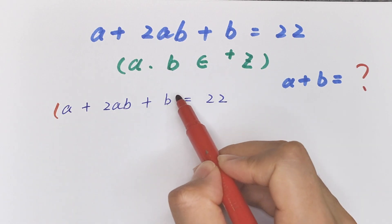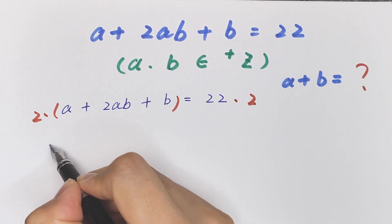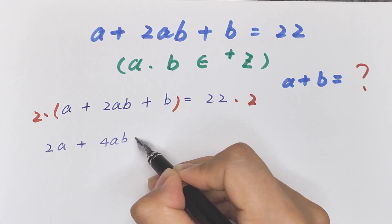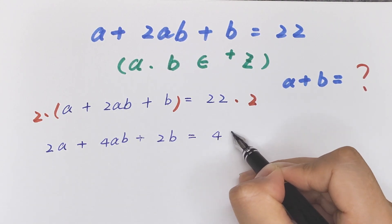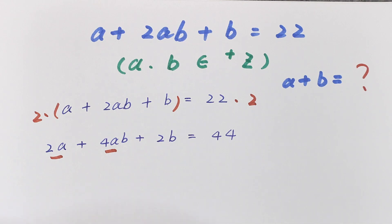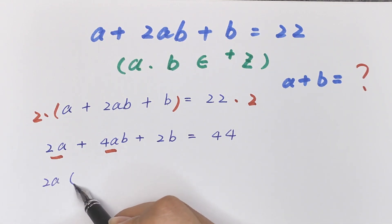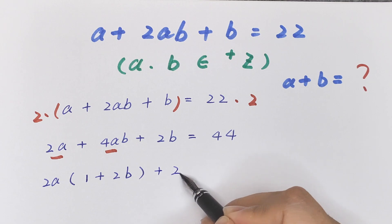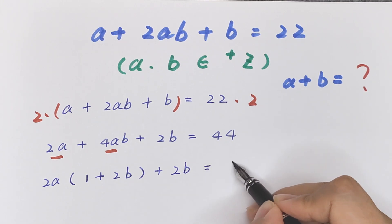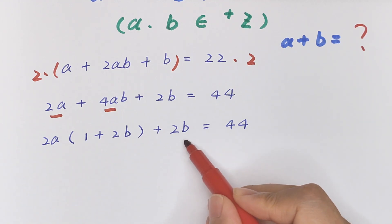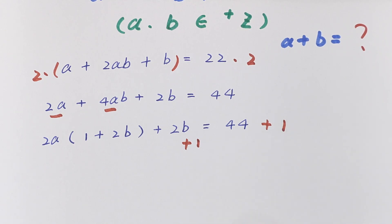First, we multiply by 2 on both sides: 2a + 4ab + 2b = 44. Since 2a is common, we factor it out: 2a(1 + 2b) + 2b = 44.